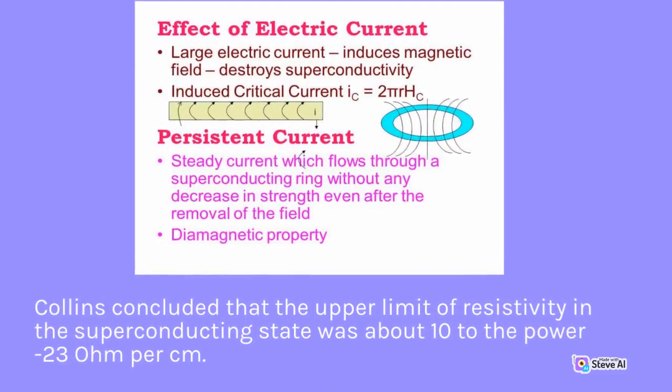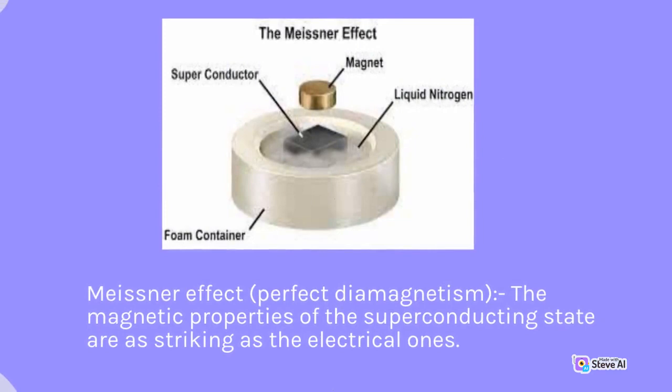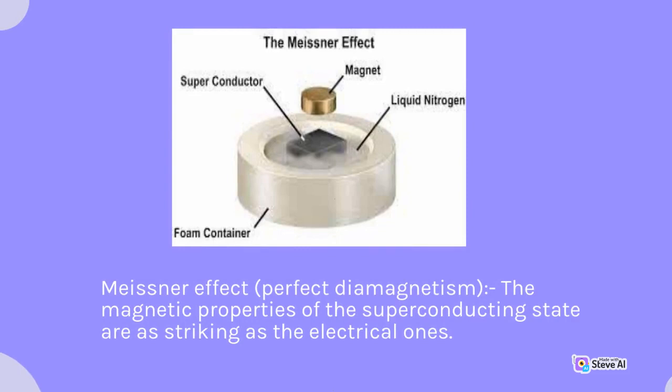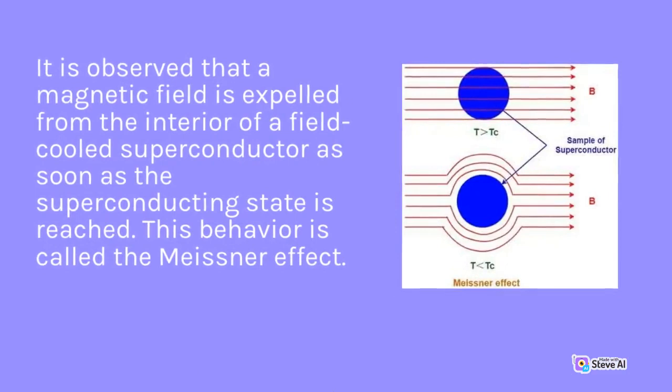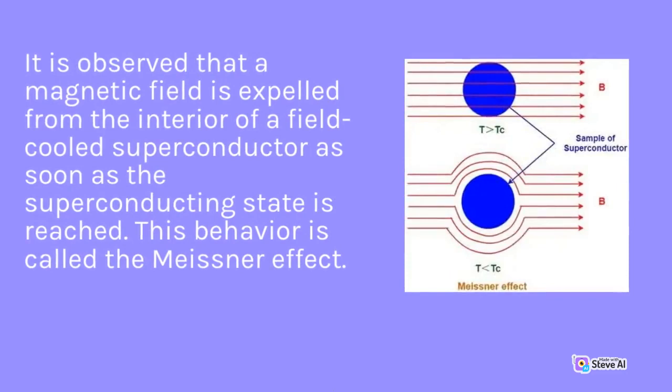The Meissner effect — perfect diamagnetism. The magnetic properties of the superconducting state are as striking as the electrical ones. It is observed that a magnetic field is expelled from the interior of a field-cooled superconductor as soon as the superconducting state is reached. This behavior is called the Meissner effect.